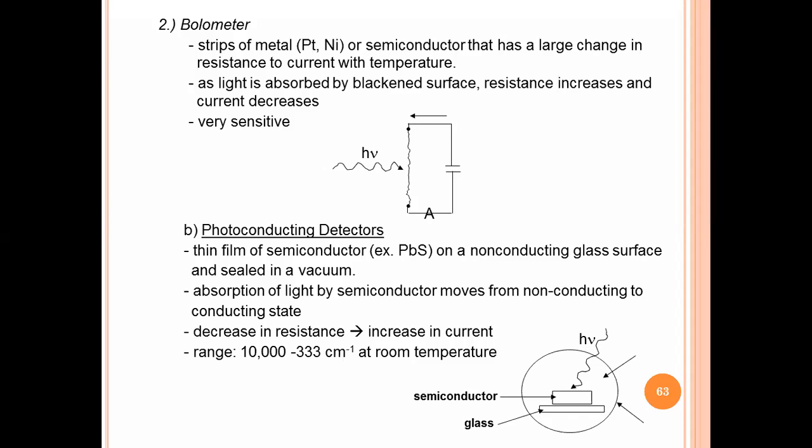In bolometer type of detector, strips of metal, generally platinum and nickel - strips of metal or semiconductor that has a large change in resistance to current with temperature. As light is absorbed by the blackened surface, resistance increases and current decreases. Very sensitive. Based on the same principle, the bolometer works.